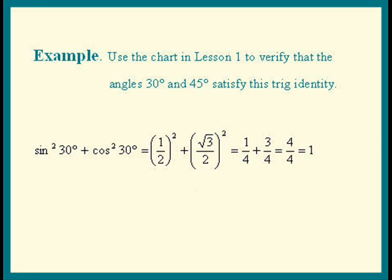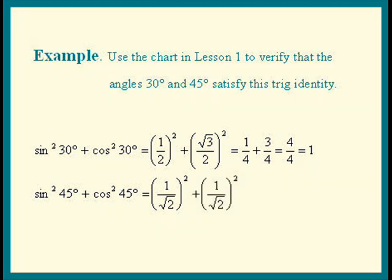Next, let's try the 45 degree angle. Sine squared of 45 degrees plus cosine squared of 45 degrees equals sine of 45 degrees equals 1 over square root 2. So does cosine of 45 degrees, that equals 1 over square root 2. Square those out, we get 1 half plus 1 half. And there's our 1.